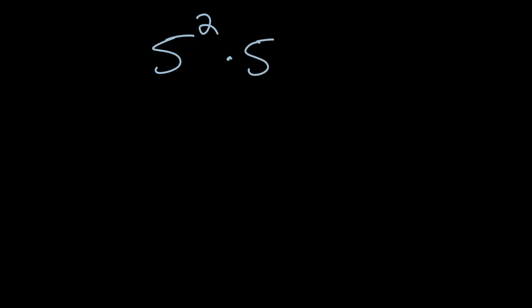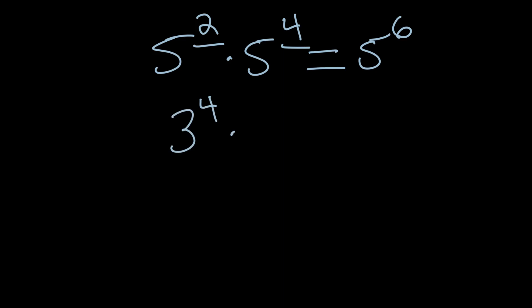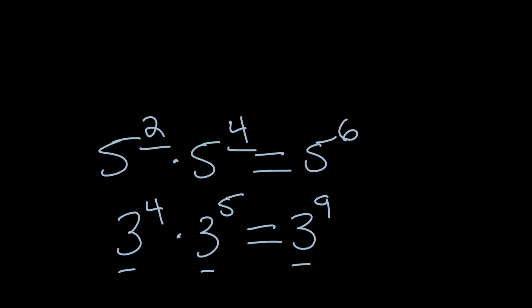Before we dive in, let's review a specific exponent property you should have seen before. For 5 squared times 5 to the 4th power, we add the exponents: 5 squared times 5 to the 4th equals 5 to the 6th. Similarly, 3 to the 4th times 3 to the 5th equals 3 to the 9th — add the exponents, 4 plus 5, and the base of 3 stays the same.